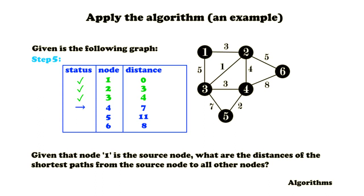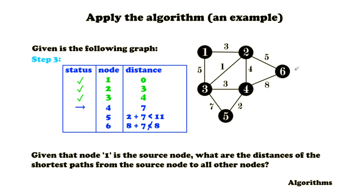We pick the unvisited node with the smallest distance again, which is node 4, mark it, and check its outgoing edges. For node 5, we find a smaller distance than previously. The edge weight is 2, summed with the known distance of node 4 gives 9. The distance for node 5 that we had previously was 11, so we update it to 9. There's also an edge going to node 6, but that distance is not smaller, so we don't update it. We're done checking node 4.